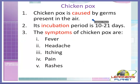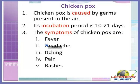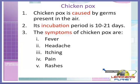Another communicable disease is chicken pox. Chicken pox is caused by germs present in the air, so this disease spreads through air. It easily spreads through a person sneezing or coughing. Its incubation period is 10 to 21 days. The symptoms are fever, headache, itching, pain, and rashes — rashes being a change in skin color, turning red, which appear on the patient's skin.